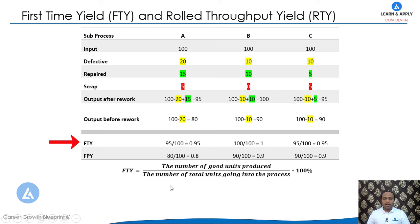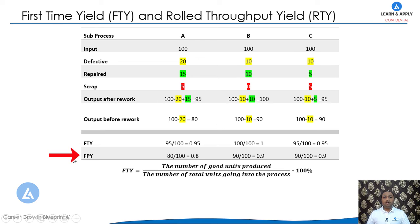The First Time Yield for Process A is 0.95, for Process B it is 1.0, and for Process C it is 0.95 again. The next important metric is FPY — First Pass Yield.